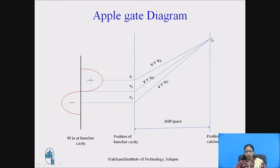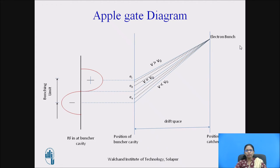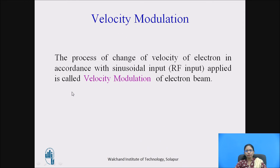All these electrons meet at a single point. There are not just three electrons — there are a number of electrons emitted during this part of the RF cycle, and all these electrons meet at a single point called the electron bunch. This part of the RF is called the bunching limit. The process of change of velocity of electrons in accordance with the sinusoidal input applied is called velocity modulation of the electron beam.